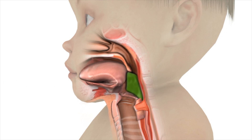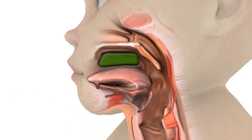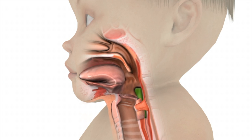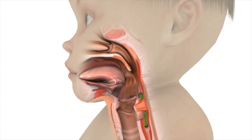Occasionally, if the oral transit stage does not properly occur due to a high palate and/or tongue tie, choking or gagging may happen as the bolus may prematurely spill into the throat before the pharyngeal stage is ready to commence.